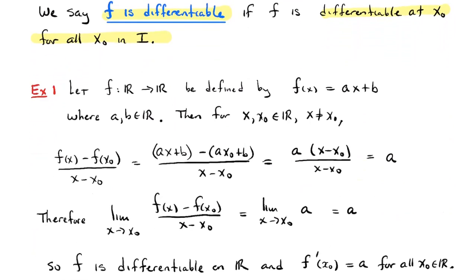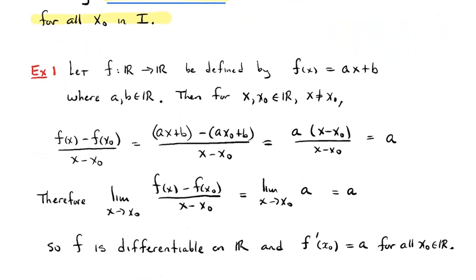Let's look at an example. Let's take a linear function. I'm going to define f on the whole real line — the whole real line is an interval, an unbounded interval from minus infinity to infinity. I'm defining f to be a linear function, which has the form ax + b for some two constants a and b. The formula for f(x) is ax + b. If you take two numbers x and x₀ that are not equal to each other, the difference quotient would be (ax + b) − (ax₀ + b) over x − x₀, and that thing simplifies to equal a.